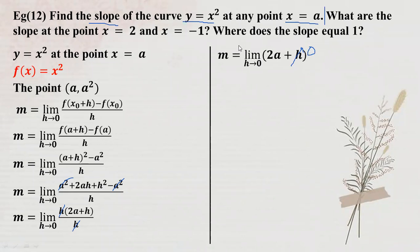So the slope - m is equal to 2a. You can find the slope for the function y equal to x squared. The result is that m equals 2a.